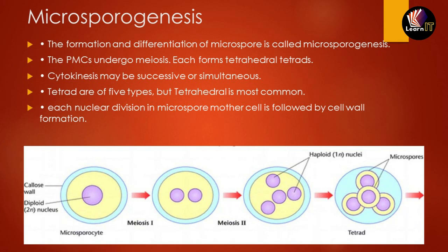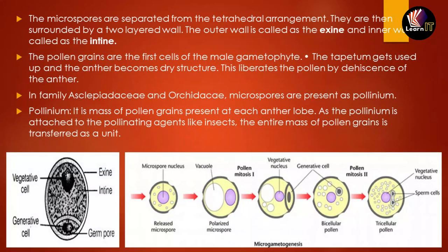After every successful division of the microspore mother cell, a cell wall is formed outside it. In the tetrahedral arrangement, the individual microspores separate from each other, and each microspore is surrounded by a double-layered wall: the outer layer is known as exine and the inner layer is known as intine, which can be clearly seen in the diagram of pollen grain representation.